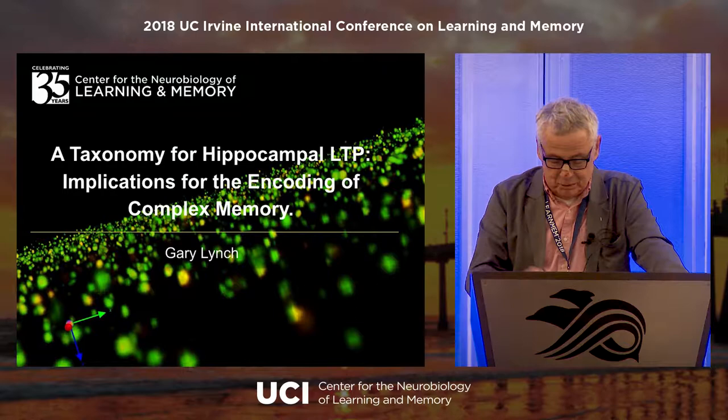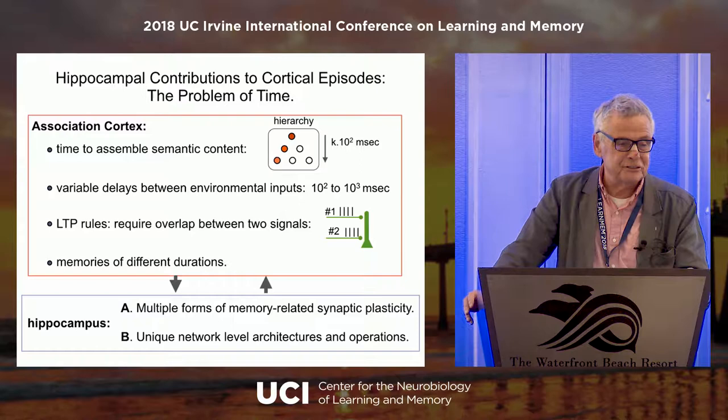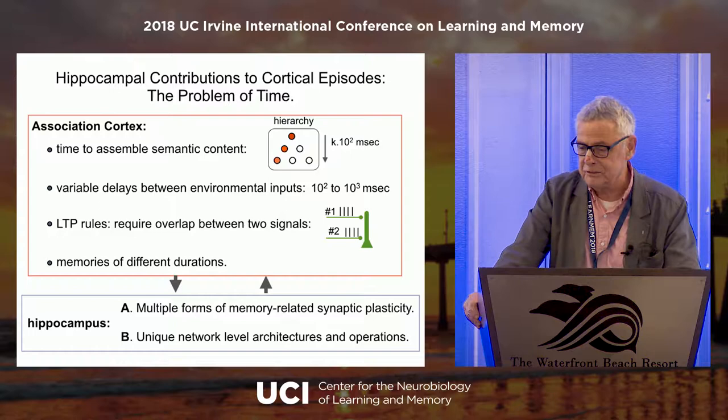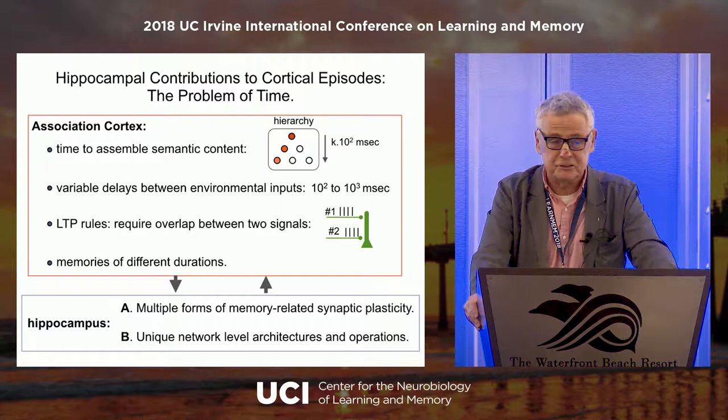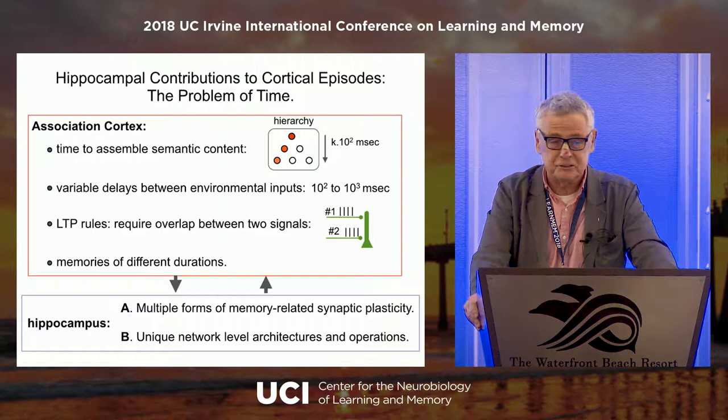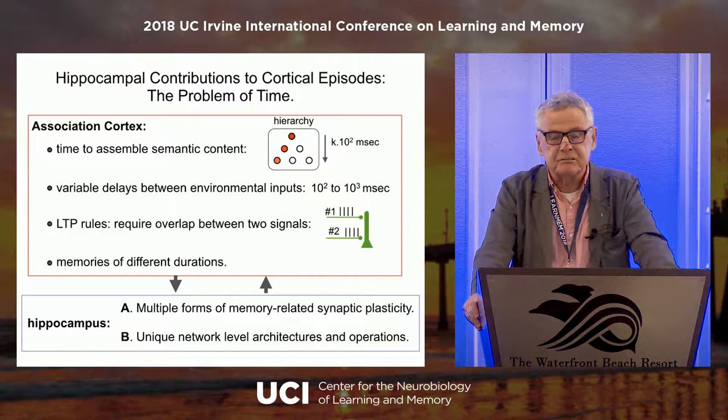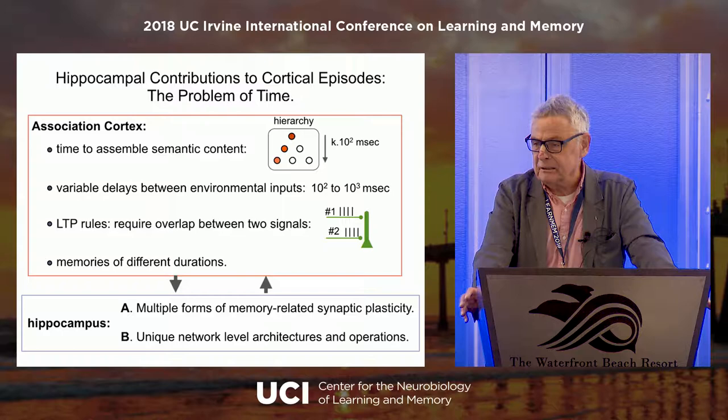Any time you go from the level of neurobiology of a brain structure to talking about memory, you almost necessarily start off with some kind of general hypothesis. And this is our general hypothesis, which strangely resembles quite a bit what Yuri Buzaki was talking about last night. There's an association cortex, and its problem is time — time to assemble semantic content.